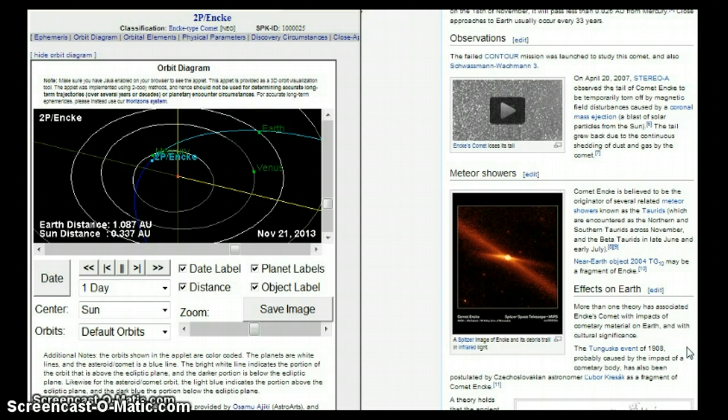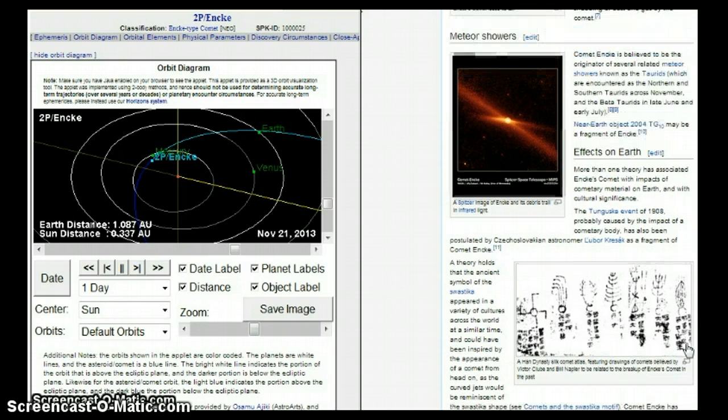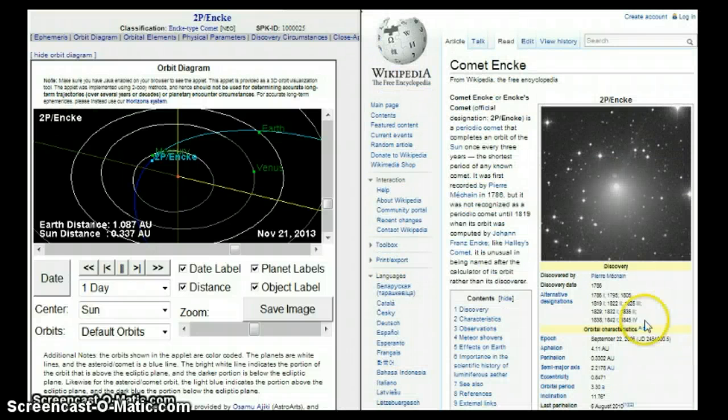But not only is this comet known for a meteorite shower, some believe that it has even had a greater effect here on Earth, sending something else. Check this out. There's more than one theory associated with Encke's comet and impacts of cometary material on Earth. Everybody remembers this: the Tunguska event of 1908, probably caused by the impact of a cometary body, has also been postulated as a fragment of comet Encke. So we don't know what these things may bring.